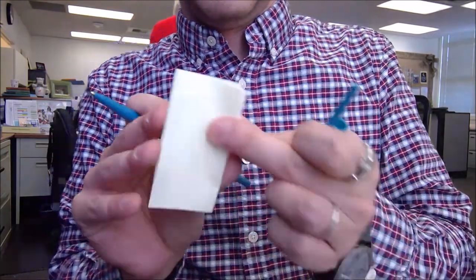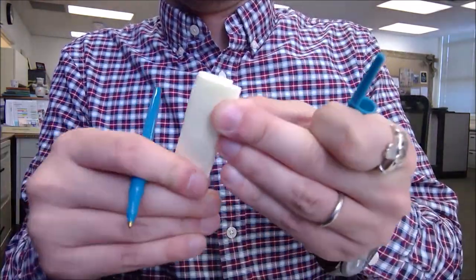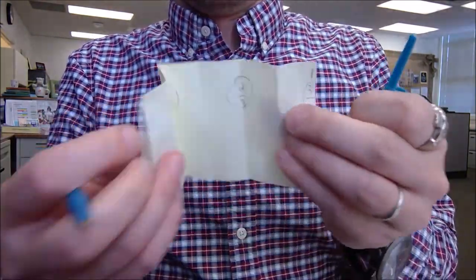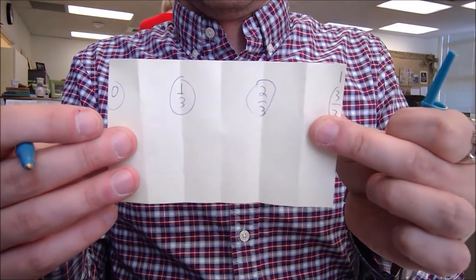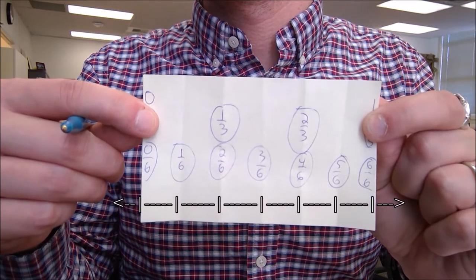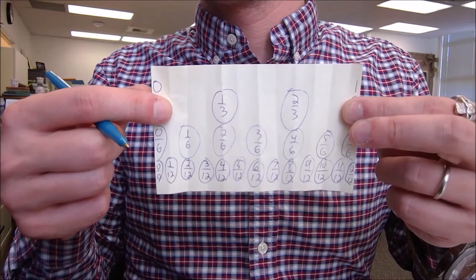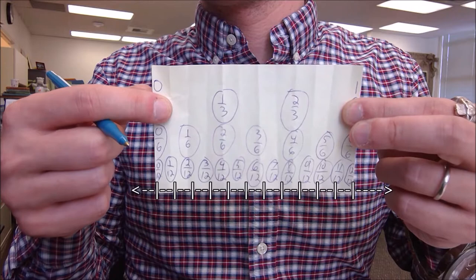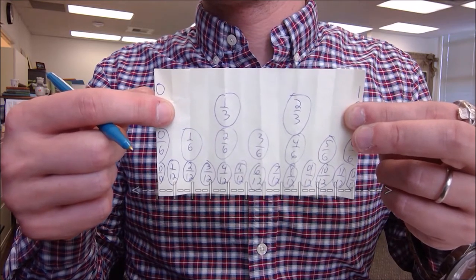We can go ahead and fold the thirds in half after we've made those six equal sized compartments. Go ahead and label and now you can show equivalency that one-third equals two-sixths, two-thirds equals four-sixths, even that equivalency of one whole equaling six-sixths and twelfths as well once you fold in half again. Now you have a much more clear visual.